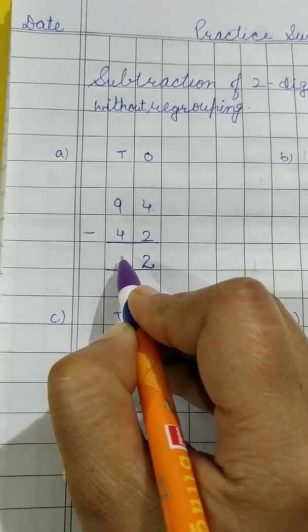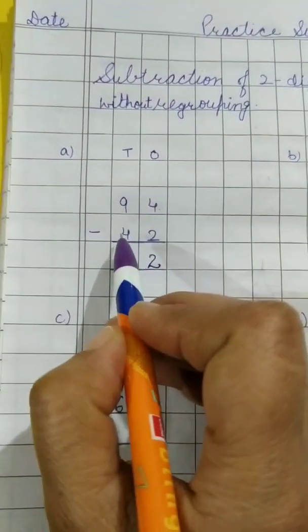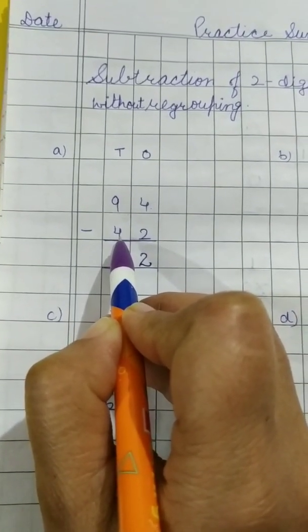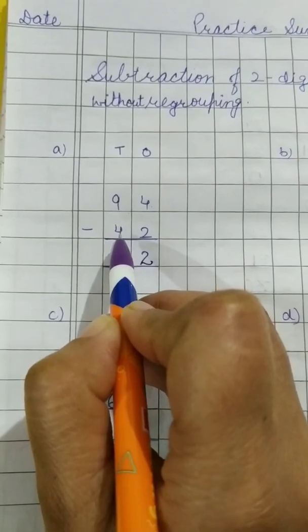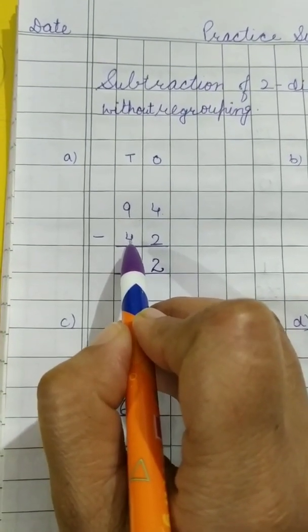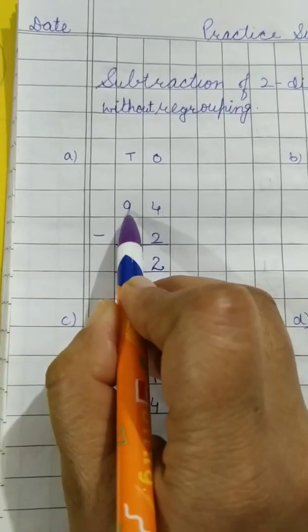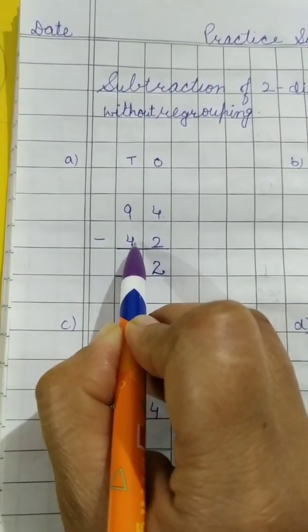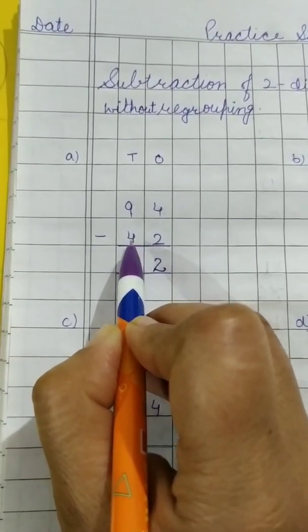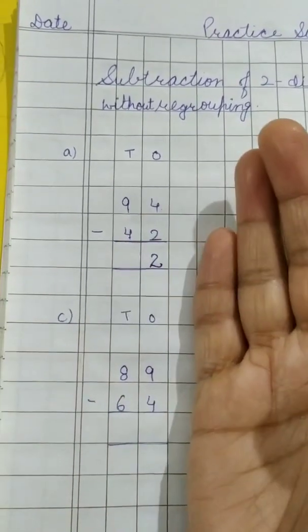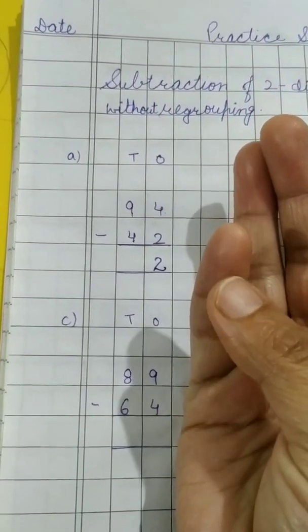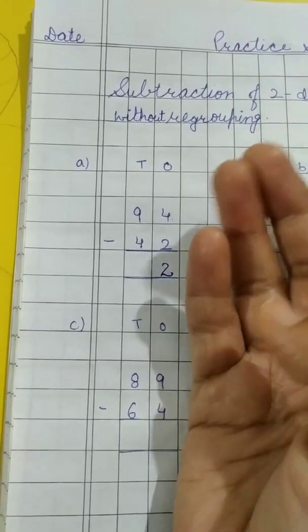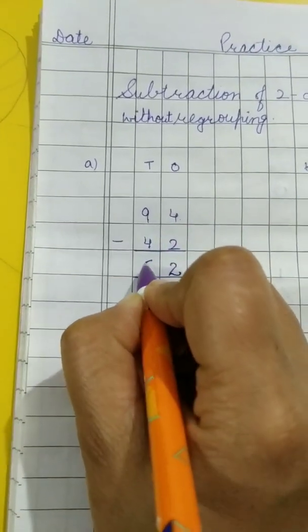9 minus 4. Do you remember this? See children, in the last videos which we did of chapter subtraction, chapter 3, we had gone from 5 to 9. Suppose the number 4 is given here. We have to start from the next number. If it is 4 here, we will start from 5. 5, 6, 7, 8, 9. So 9 minus 4 is 5.